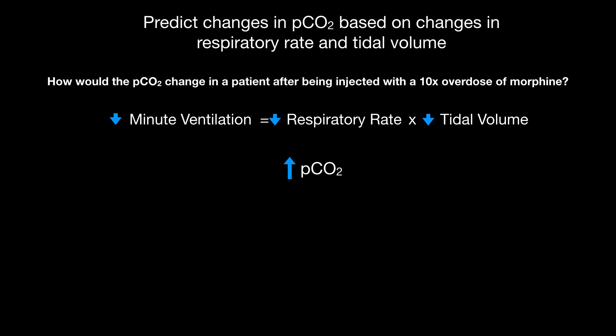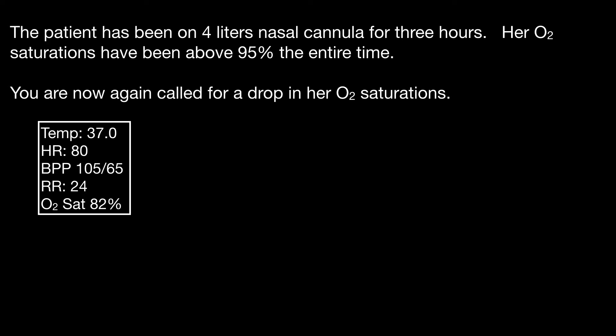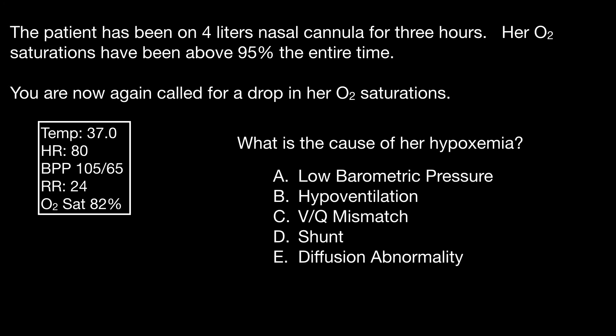Now that we've talked about causes of hypercapnia and how dead space increases hypercapnia, let's move on to the mechanisms of hypoxemia using a case. A patient has been on 4 liters nasal cannula for 3 hours with oxygen saturation of 95%, and you are now called for a drop in her O2 saturations to 82%. What's the cause of her hypoxemia? Is it low barometric pressure, hypoventilation, VQ mismatch, shunt, or diffusion abnormality? These are the five classic causes of hypoxemia.